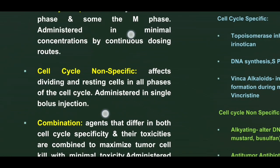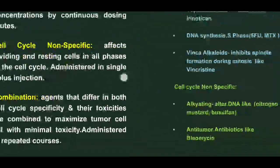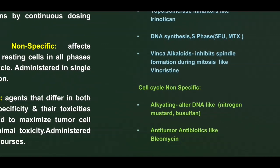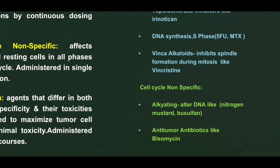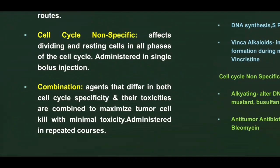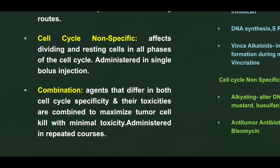Cell cycle non-specific drugs affect both dividing and resting cells in all phases of the cell cycle, administered in a single bolus injection. Examples include alkylating agents that alter DNA, like nitrogen mustard and busulfan, or anti-tumor antibiotics like bleomycin and mitomycin. Combination drug regimens use agents that differ in both cell cycle specificity and toxicities to maximize tumor cell killing with minimal toxicity, administered in repeated courses.